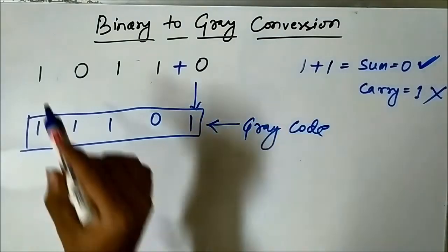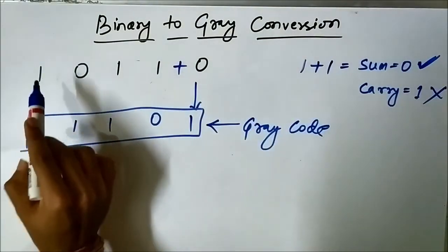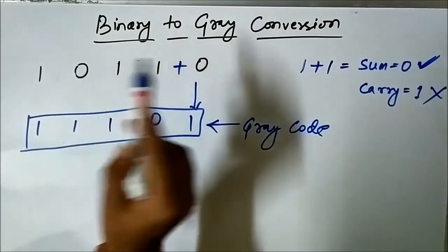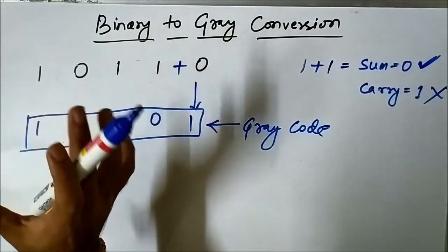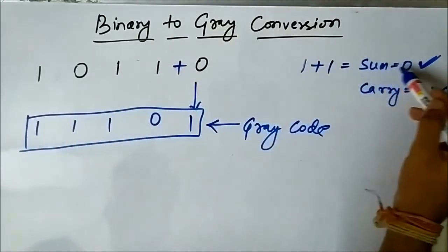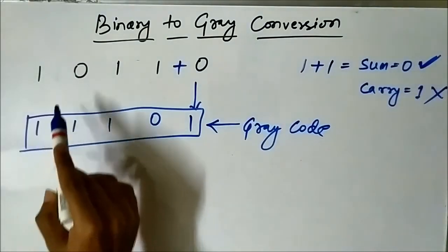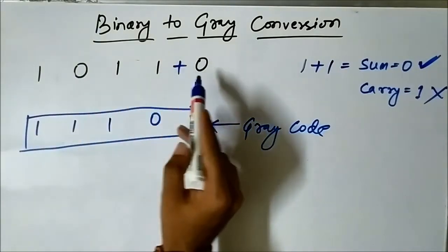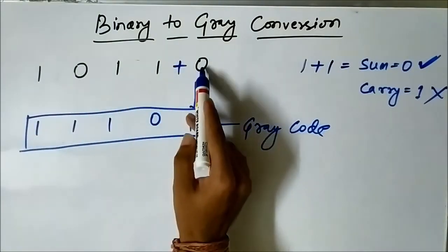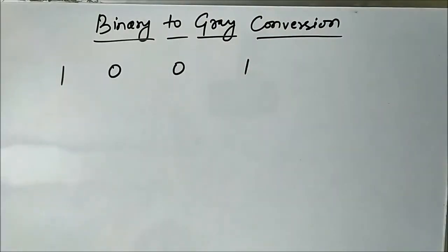The only things to remember: the MSB of the binary and the MSB of the gray are the same. Then you perform the addition of the successive bits present in the binary code. While adding two 1 bits, just consider the sum equals 0 and discard the carry. Perform subsequent additions of the bits until you reach the final bit of the binary to get the required gray code.